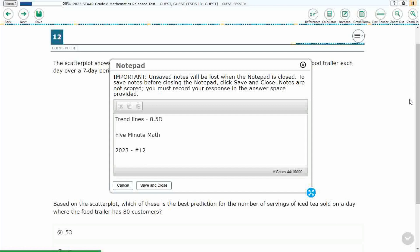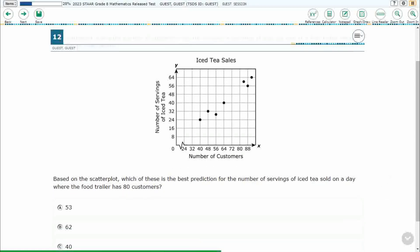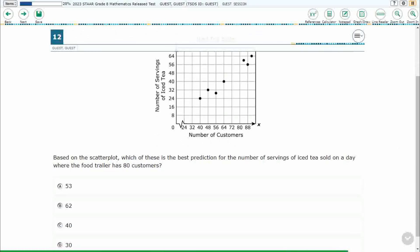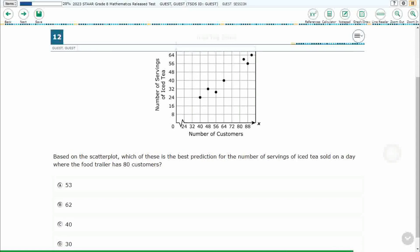Hello and welcome to 5-Minute Math. Today we are looking at the 8th grade concept of trend lines. This is standard 8.5D in the great state of Texas. We are using item number 12 of the 2023 released STAAR test. If you haven't done so already, please go ahead and take a moment to pause the video, work this problem out on your own, unpause it, and we will look at our answers together.